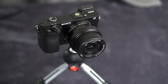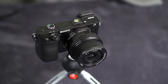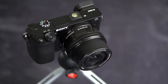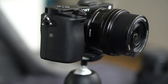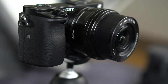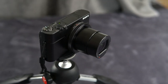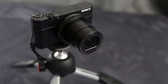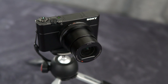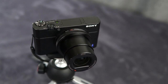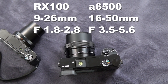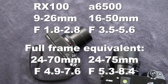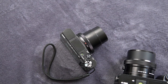The a6500 is Sony's top APS-C camera, and with the sensor more than three times the size of the RX100, one could assume it will create much better pictures, particularly in low light and for creating subject isolation with background blur. However, the RX100 has a much brighter lens, which goes from f1.8 to f2.8 compared to f3.5 to f5.6 for the kit lens. So if we convert the specs to their full frame equivalents, you see that they are actually very close when we adjust for sensor size. So let's see how that turns out in pictures.